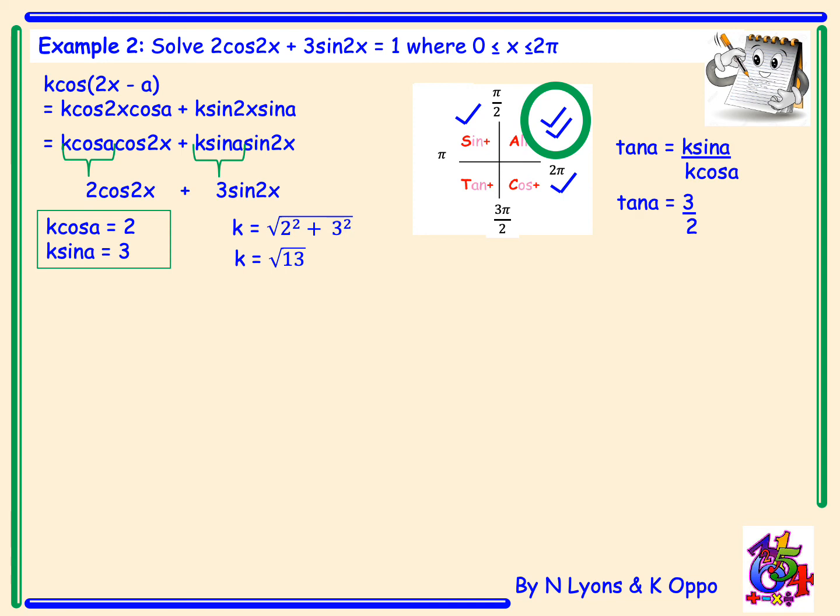Now this will not be an exact value so you must ensure at this point that you have changed your calculator into radians. Once your calculator is in radians you'll do inverse tan of 3 over 2 which gives you an answer of 0.98. Therefore we can clearly state that 2 cos 2x plus 3 sin 2x equals root 13 cos of 2x minus 0.98 and that's it in wave function form.